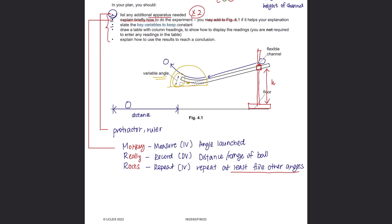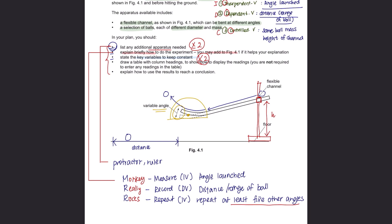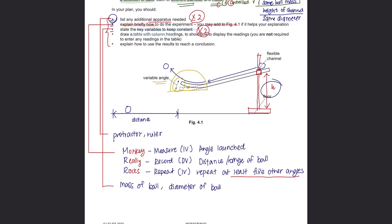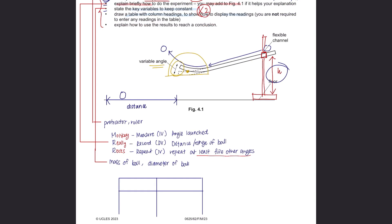Next, state the key variables to keep constant. For key variables to keep constant, also pay attention that you should mention at least two. We have already discussed, to keep the experiment fair, we need to use the same mass of the ball, even though different masses are given, and the same diameter to ensure that this experiment is fair. An additional point that you could write would be the height of the channel when the ball is being launched. Next, draw a table with column headings to show how to display the readings. You are not required to enter any readings in the table. When drawing a table, always include your independent variable and dependent variable, which is your angle for independent variable and distance for dependent variable. A very important note that you should pay attention to is that when drawing a table with column headings, make sure that your units are being included.